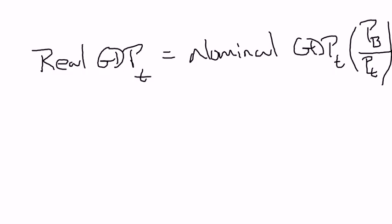In this particular example, I'm going to give you nominal GDP, the price level in the base year, and the price level in the current year, and ask you to solve for real GDP. But in principle, I could give you real GDP and nominal GDP and the price of the base year and you could solve for the current price level, or give you the current price level, the price in the base year, and real GDP, and ask you to solve for nominal GDP. Once you know the equation and understand the intuition, it's just high school algebra.